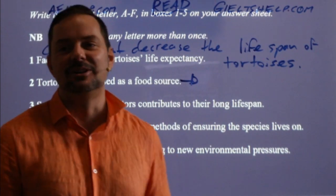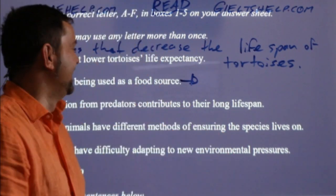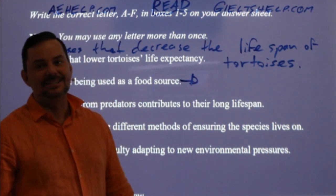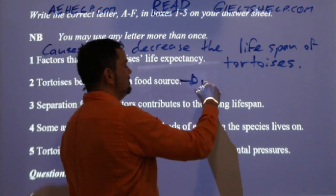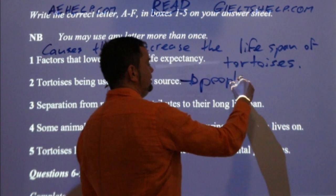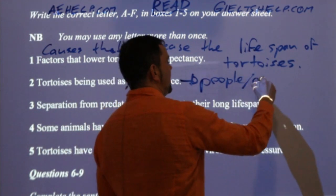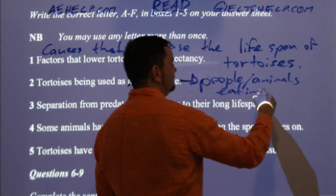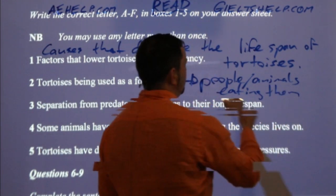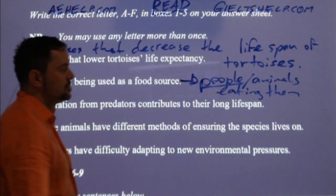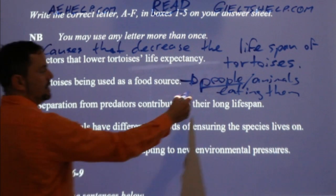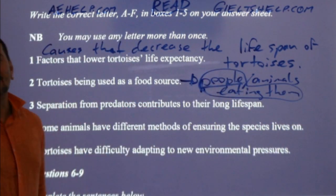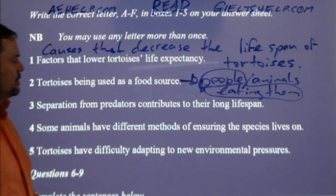Juan Pablo says 'people eating them.' So people or animals eating them — it's probably more people because it's a food source. Simple paraphrasing is 'people eating them.' Thank you, Juan Pablo. So that's what we're doing — we're going through these. When we practice for the IELTS we do it on paper; in the real exam we're doing this in our head.